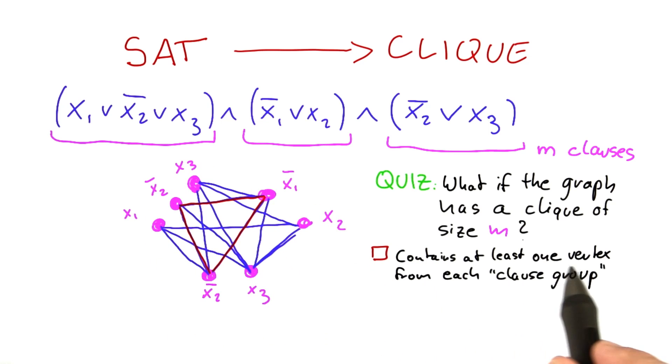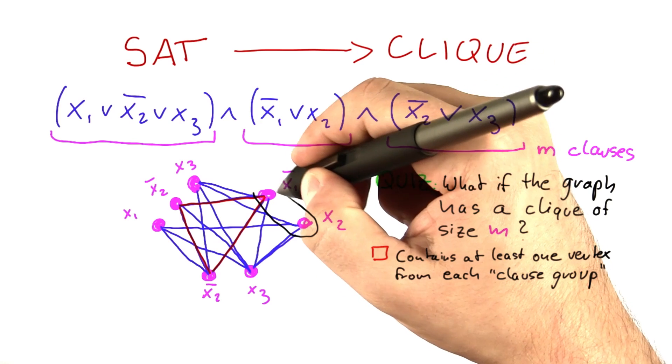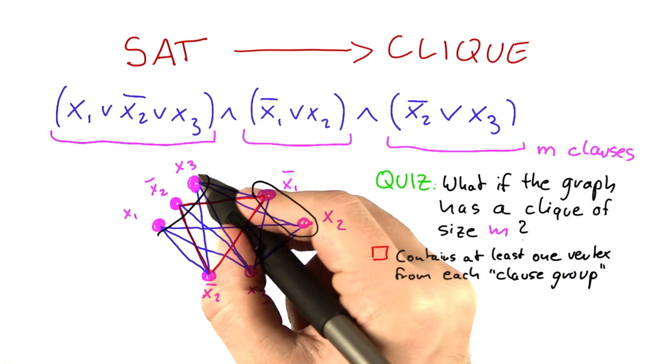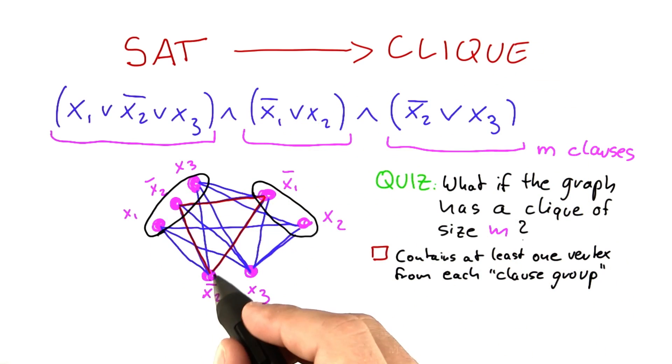does that graph contain at least one vertex from each clause group? And by clause group, I mean the groups of vertices that we introduced for each of the clauses from our satisfiability formula.